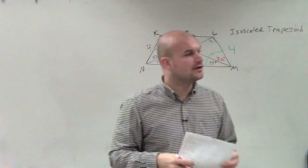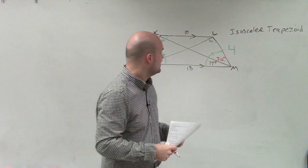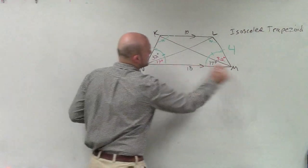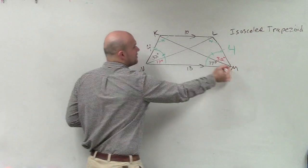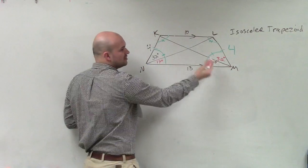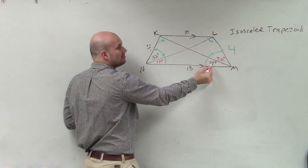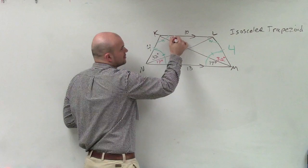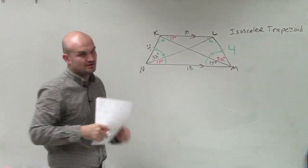We can also use the idea of alternate interior angles, meaning the fact of, since these are parallel lines, right, and we have this line here that's a transversal, if that's 17 degrees, by applying alternate interior angles, we know that that's 17 degrees.